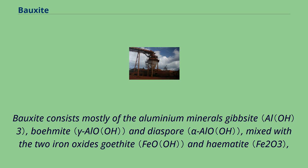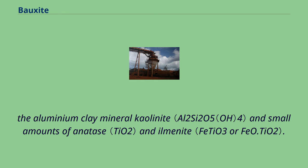Bauxite consists mostly of the aluminium minerals gibbsite, boehmite, and diaspore, mixed with the two iron oxides goethite and hematite. The aluminium clay mineral kaolinite forms, along with small amounts of anatase and ilmenite.